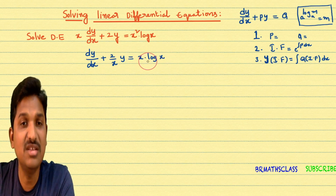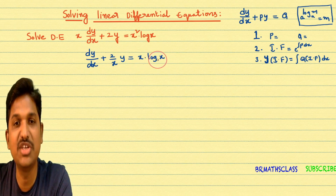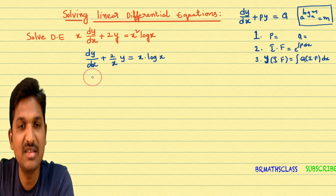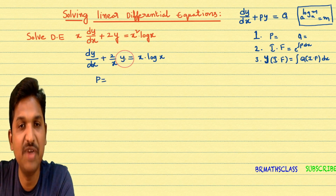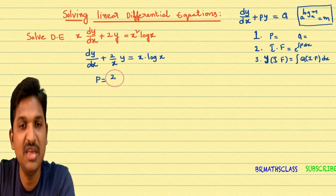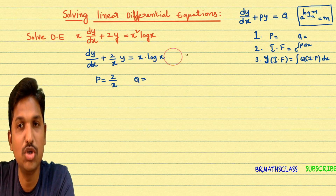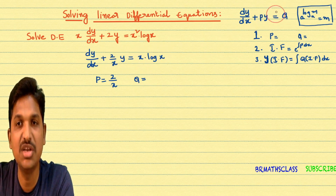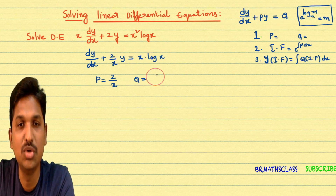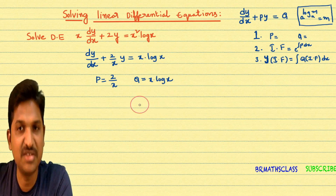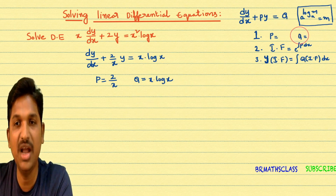Now, what is the procedure to solve this linear differential equation? First, we identify the functions p and q. Comparing dy/dx + (2/x)·y = x·log x with dy/dx + py = q, we get p = 2/x and q = x·log x. We have completed the first step — identifying p and q.